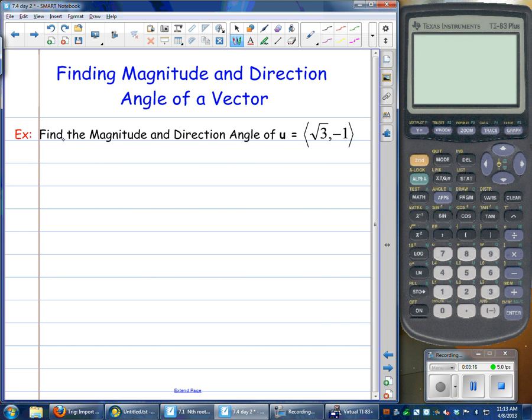Alright, so here we go. First example, let's find the magnitude and direction angle of vector U, or the position vector U, represented by the ordered pair (√3, -1). So the first thing I'm going to do here is I'm going to draw a sketch, and if you just look at that ordered pair, hopefully you'll notice that that is in quadrant 4, with a positive X value and a negative Y value. So what we're going to do is we're going to scale this thing out. √3, don't let that fool you, it's approximately 1.7 something.